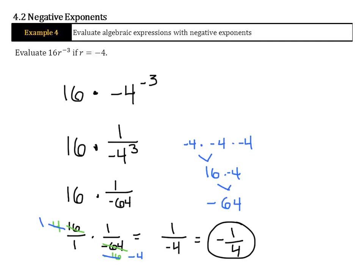You could have also just simplified 16 over negative 64 directly to get negative one-fourth — any method that gets you there works. Good luck.